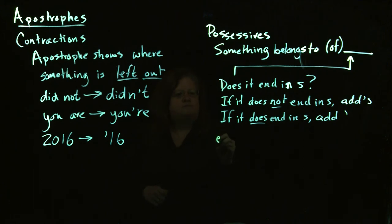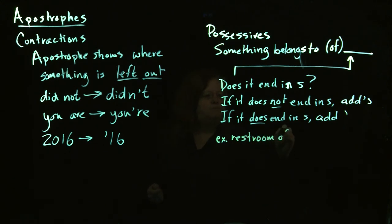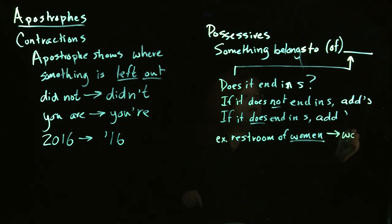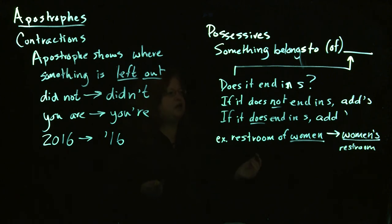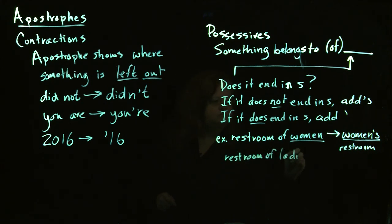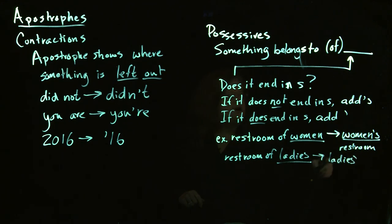For example, if we are talking about a restroom that belongs to women — the restroom of women — notice that it is plural, but we don't worry about whether it's plural. We worry about whether it ends in S. Since 'women' does not end in S, this will be a 'women's restroom' with apostrophe S at the end. Now, if you're in a more upscale establishment and the restroom belongs to ladies — 'ladies' already ends in S, so we will say it's the 'ladies' restroom' with just the apostrophe at the end.